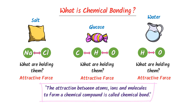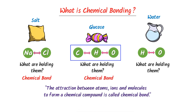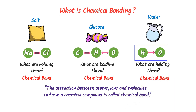Therefore, we say that a chemical bond exists between sodium and chlorine to form salt, a chemical bond exists between carbon, hydrogen, and oxygen to form glucose, and a chemical bond exists between hydrogen and oxygen to form water. Thus, it is the chemical bond that is making everything around us.